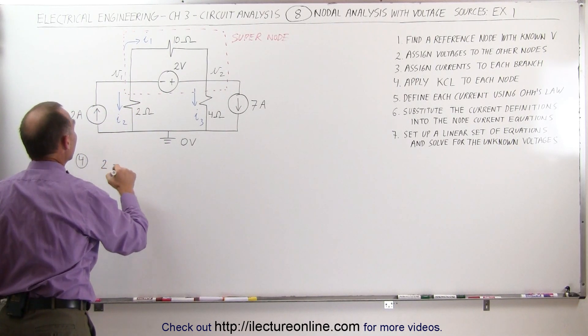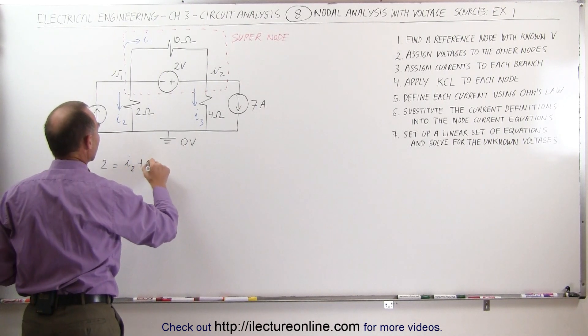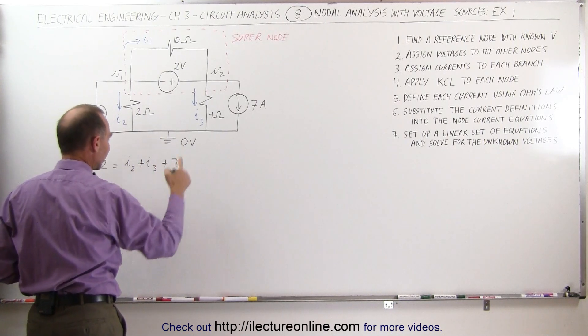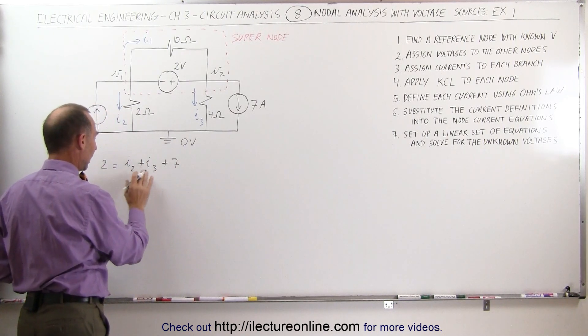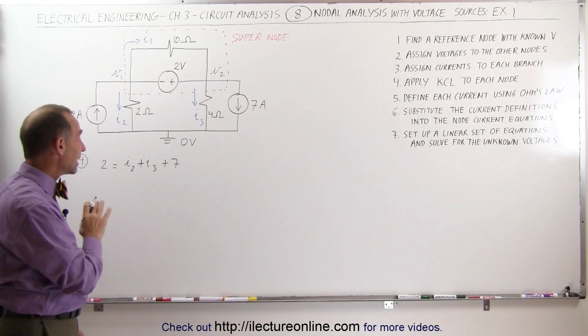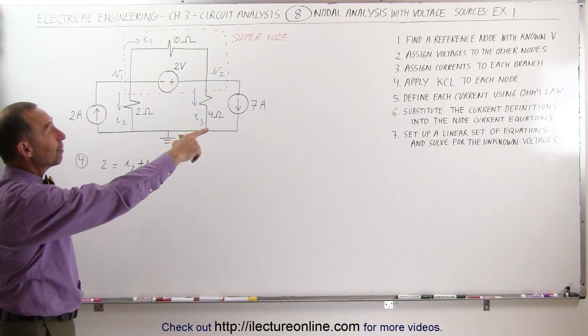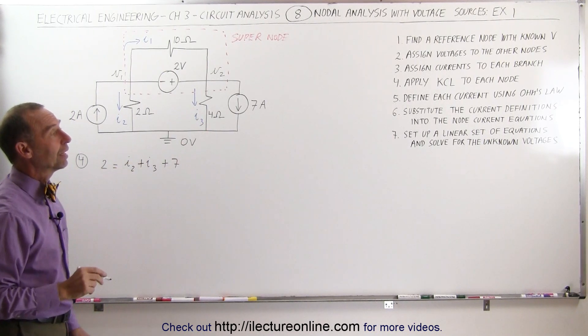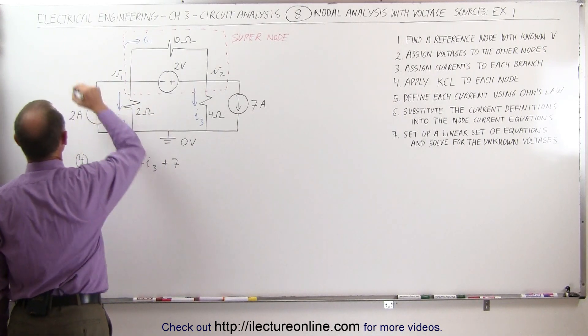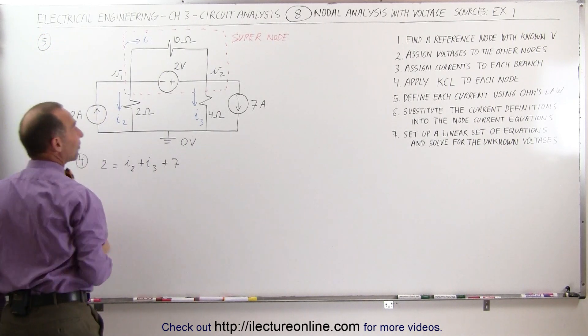Our equation will now look as follows. So number 4, now we'll have a single equation, where this is now called the super node. All the currents entering must equal all the currents leaving that node, which means 2 amps going in must equal the I2 coming out, the I3 coming out, and the 7 amps coming out. So now we have a singular equation that has I2, I3, and one equation, two nodes, we know we cannot solve that. However, we're now going to use the same technique as before.